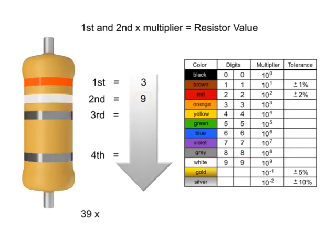The third band is silver, so we multiply the first two numbers by 10 to the negative second power, or .01. In this instance, we would take the 39 and move the decimal point two places to the left, resulting in a value of .39 ohms.